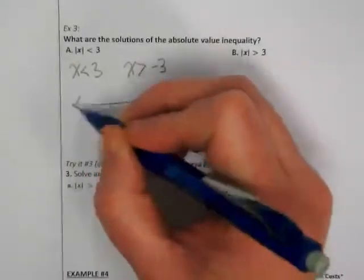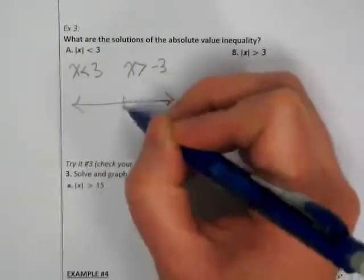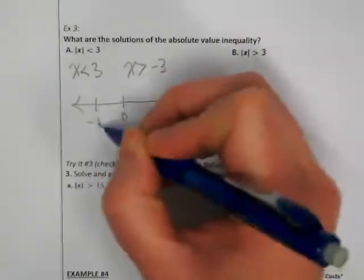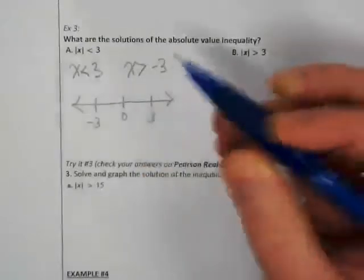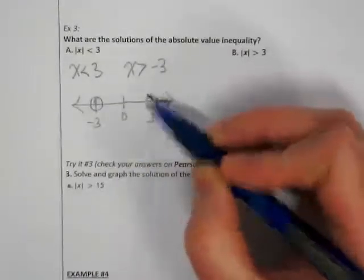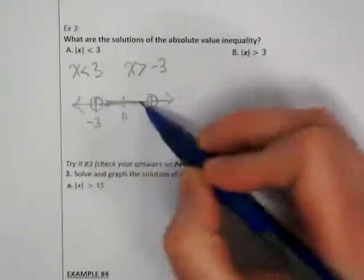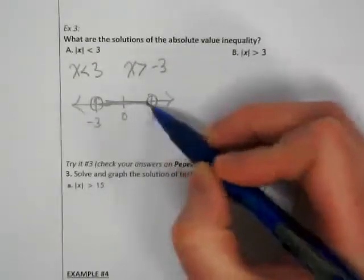So what would this look like on a number line? It would be that space in between negative 3 and positive 3.